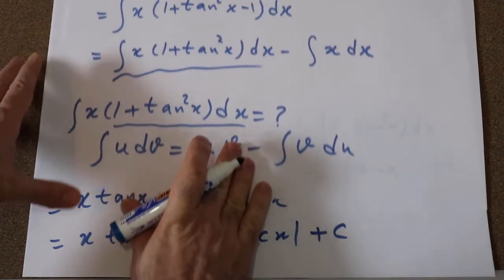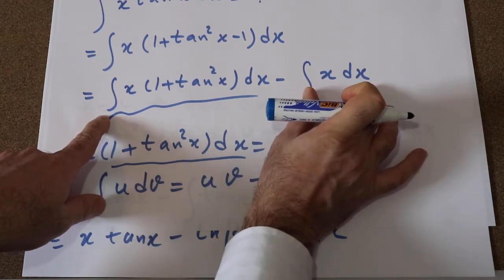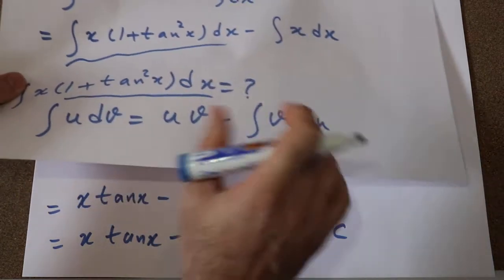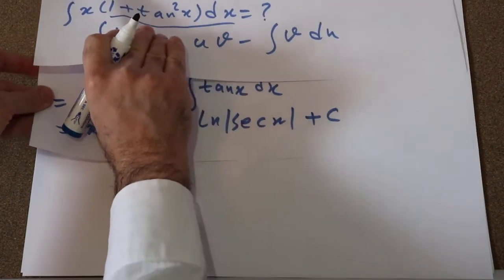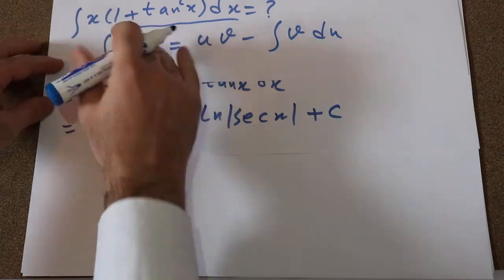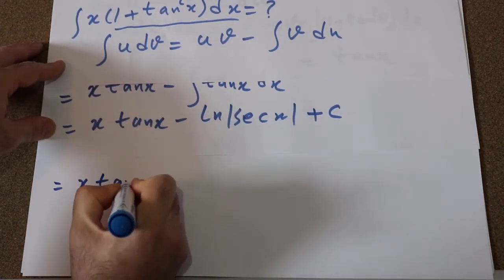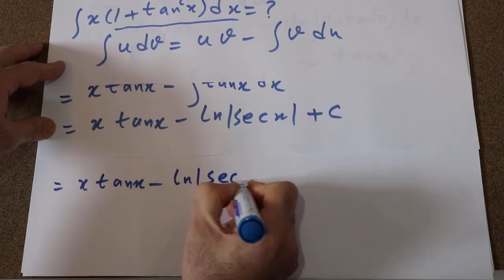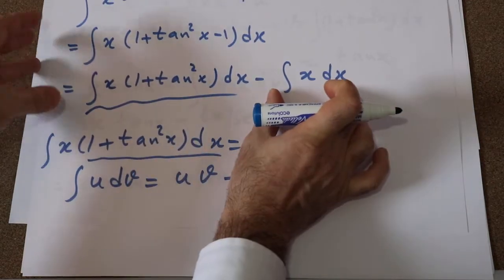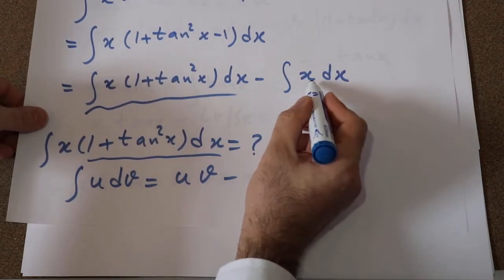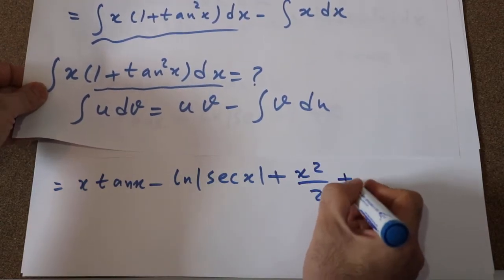So now we have the integral of the first part of this equation, and we know the integral of x dx, therefore we can solve our integral. So the final solution basically now will be equal to x tangent x minus ln secant x plus the integral of the second term here, which was integral of x dx will be equal to x² divided by 2 plus c.